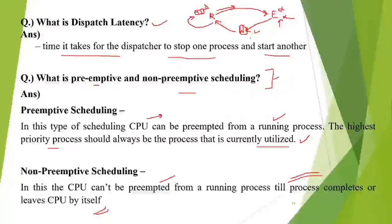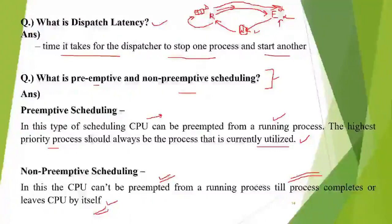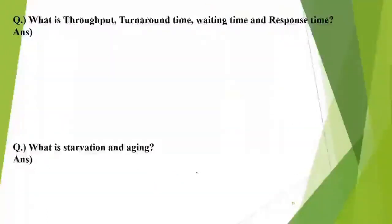If the process is in the waiting state, there is no requirement for it to be in the execution state, so it will wait in the waiting queue until the input device becomes available. In the meanwhile, another process can be scheduled from the short-term scheduler to the execution mode. In non-preemptive scheduling, the CPU cannot be snatched from a running process unless the process itself completes or voluntarily releases the CPU.